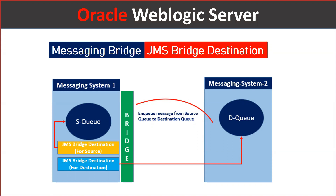We saw a demo of how to configure the JMS messaging queue, JMS module, and JMS server for end-to-end communication — how an application sends a message to a queue and picks from the queue. But practically in the enterprise world, a single application communicates with many other applications, with lots of integrations where applications may exist in the cloud or on-premise, with different providers and different ownership.